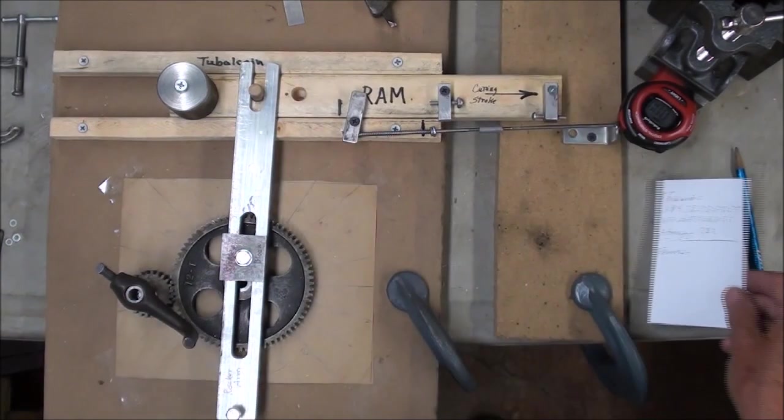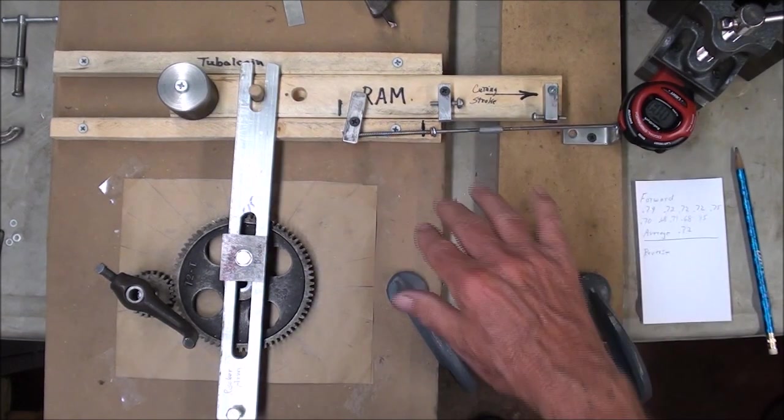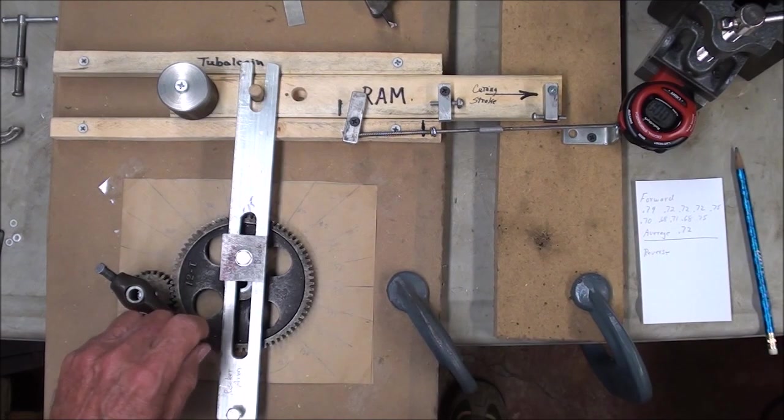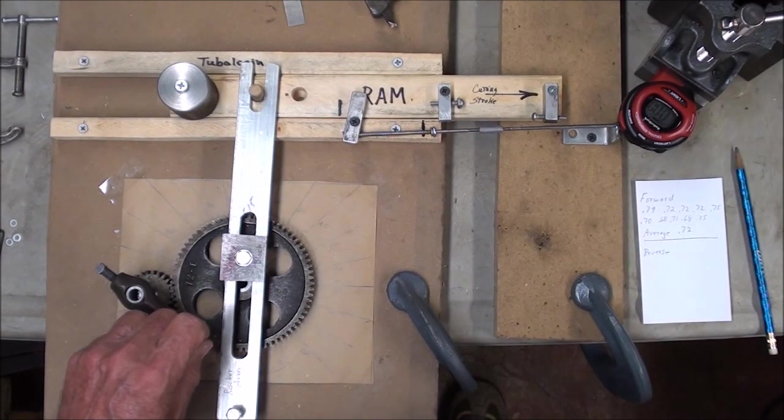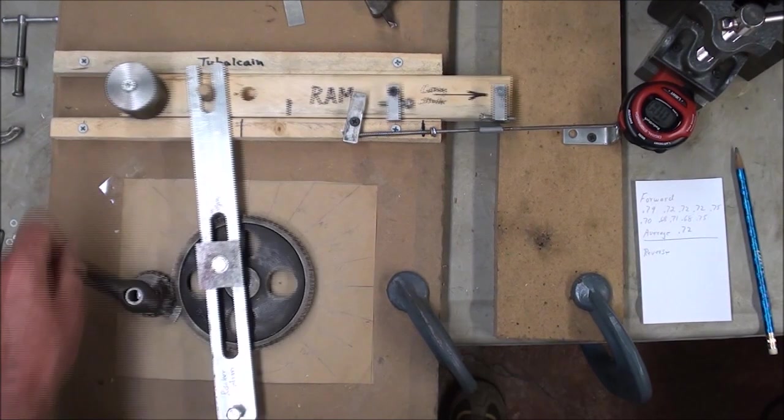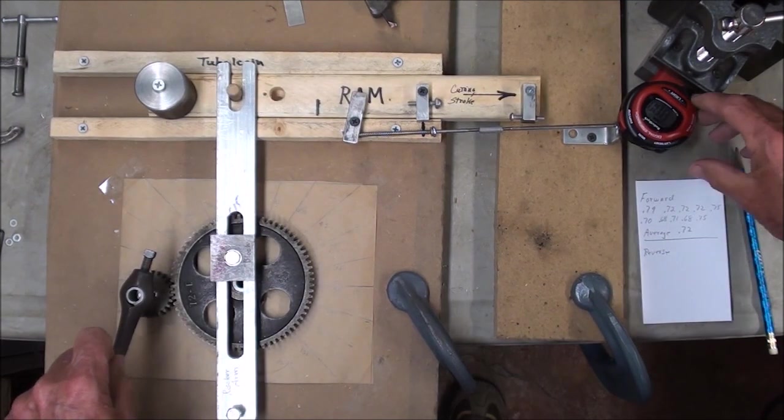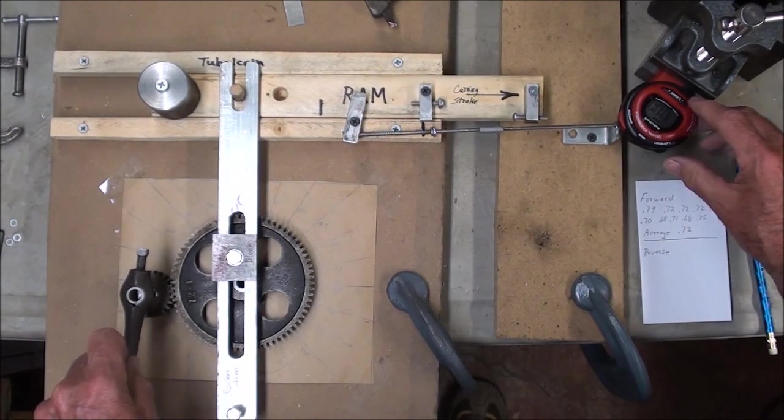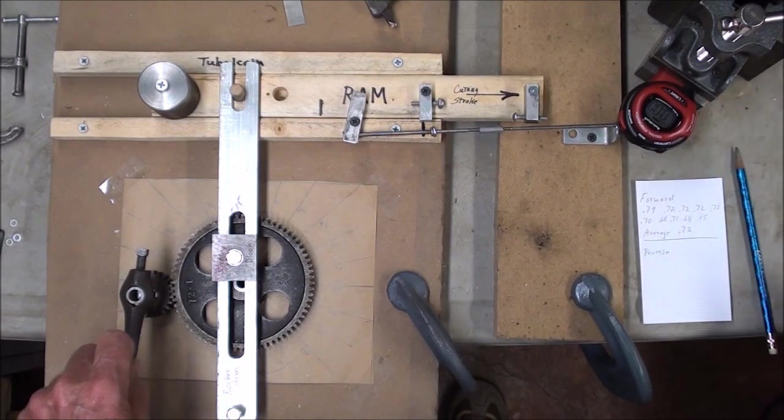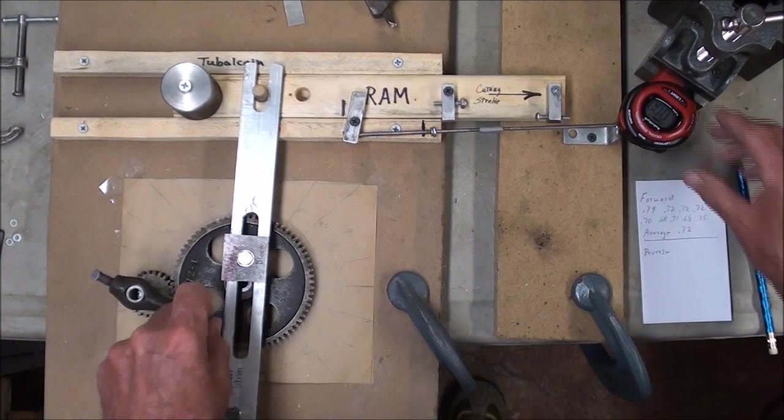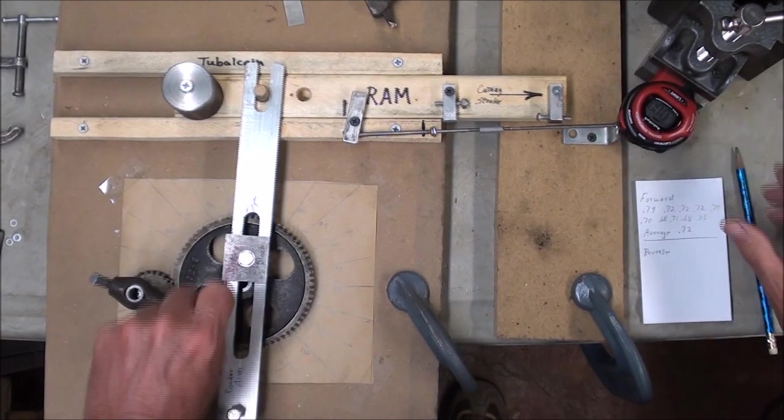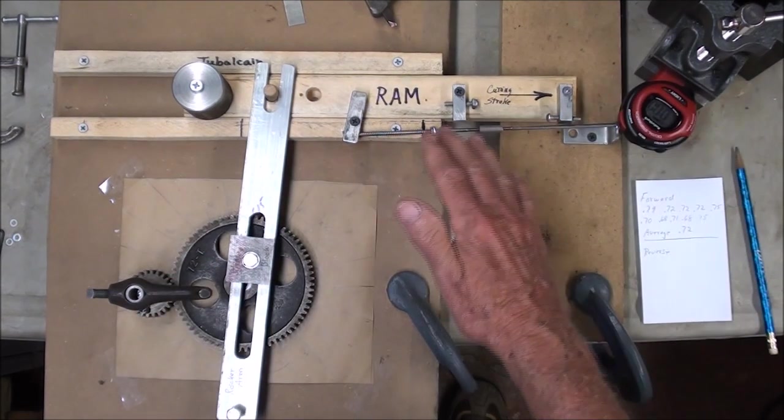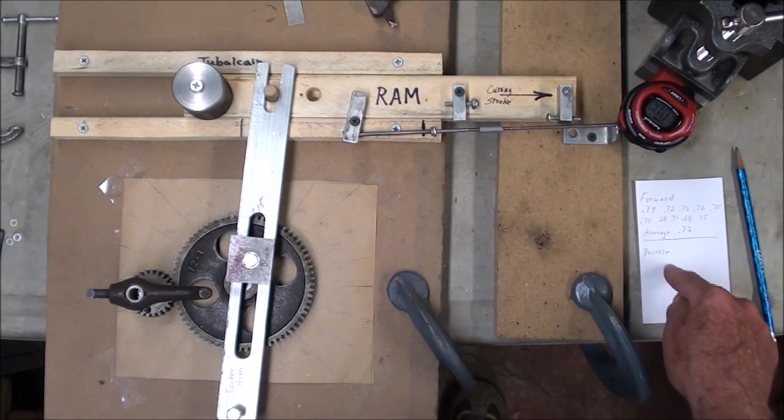And I've changed the timing here so that I will be measuring the reverse stroke, the non-cutting stroke. So watch the mechanism now. That was .65. .56. .56. I'm reading upside down. .53. .53. And I will do ten of those off camera, and record them right here, and find the average.